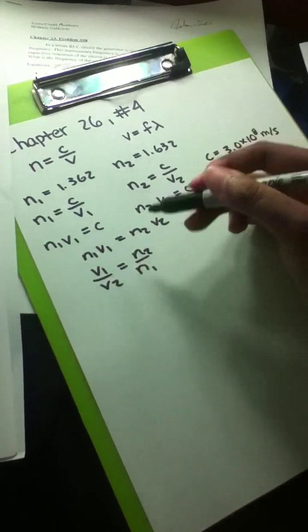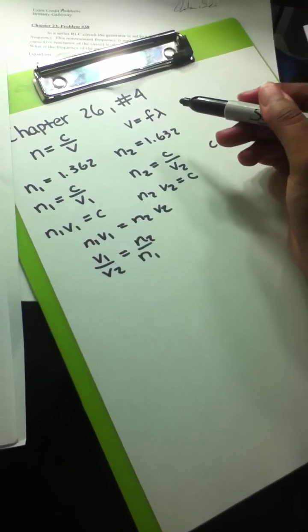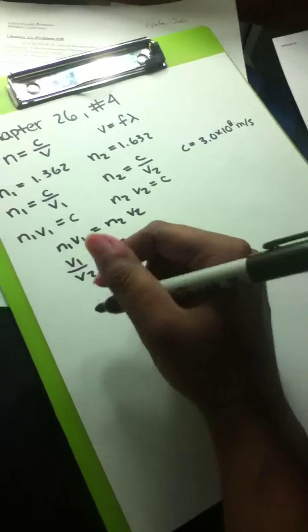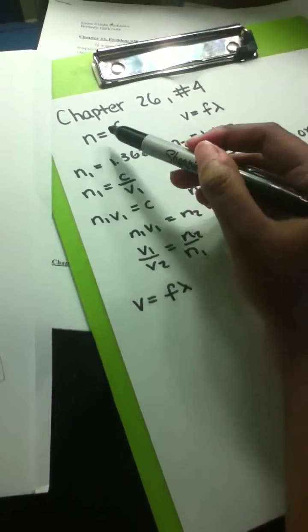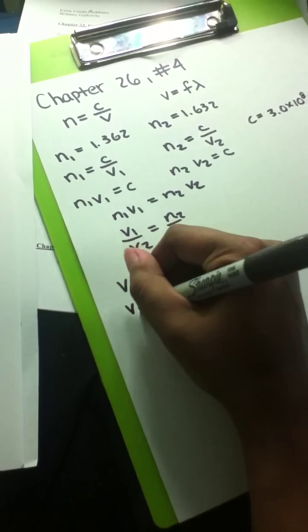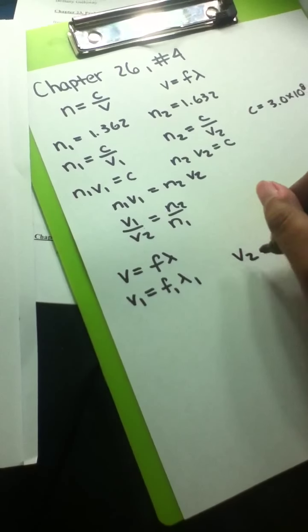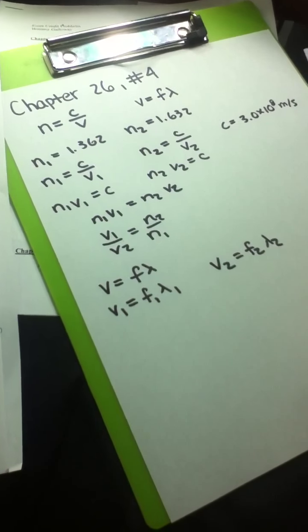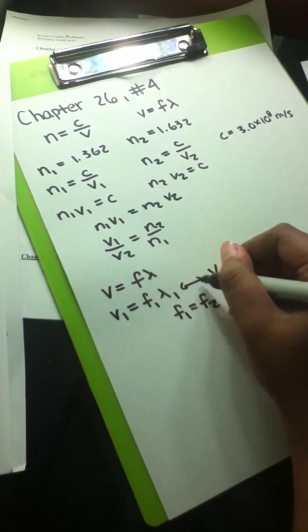I wrote the equation this way because I'm now going to work with the wavelength equation. The problem states that the frequency of a light wave is the same when the light travels in ethyl alcohol or in carbon disulfide — meaning F1 is equal to F2. Using the velocity equation, I'll write two equations: V1 equals F1 times lambda 1, and V2 equals F2 times lambda 2.